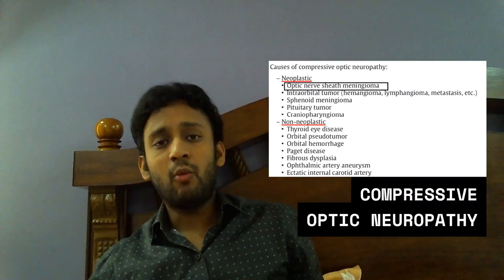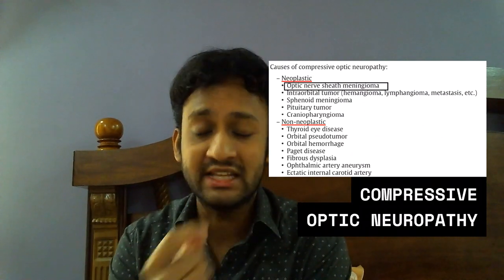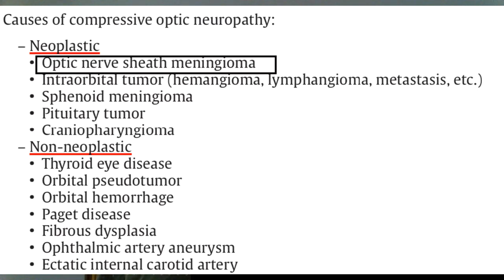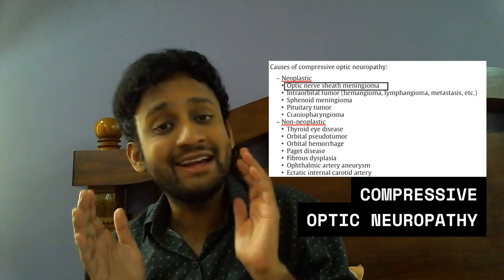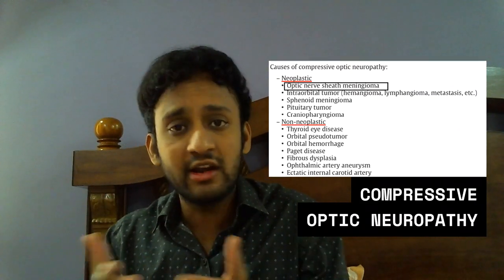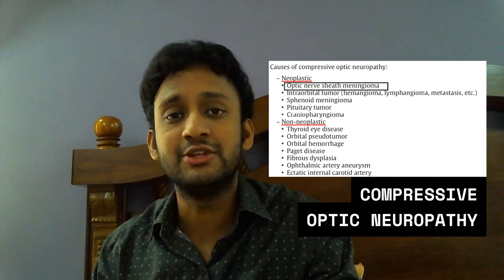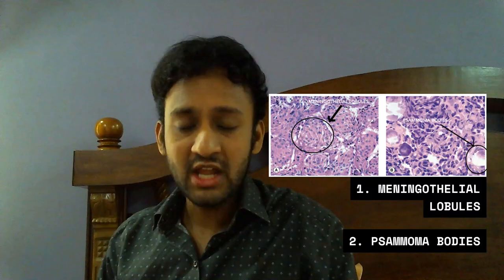The patient has a compressive optic neuropathy. There are two important types of lesions causing this: neoplastic and non-neoplastic. Among neoplastic causes, optic nerve sheath meningioma is a very important and frequently found tumor. In non-neoplastic causes, thyroid disease and orbital pseudotumors are important. In our patient, the MRI clearly showed single eye involvement, whereas thyroid disease is mostly bilateral. The typical tram track and donut signs point toward optic nerve sheath meningioma.